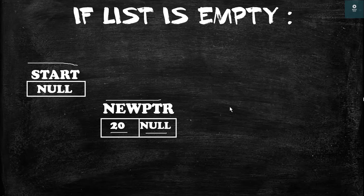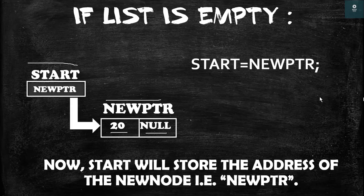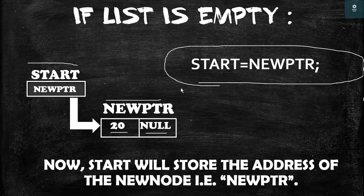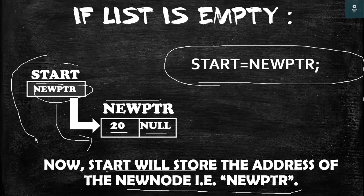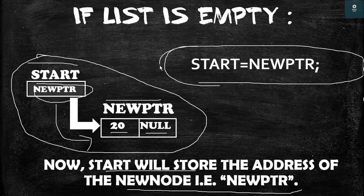Hence in every new node you will store a null value in the pointer field. After this we have to follow only one simple step: start is equal to newptr. So start will point to newptr — newptr's address is stored inside start. In this way we can insert a node at the beginning of the linked list with just one step: start equals newptr.